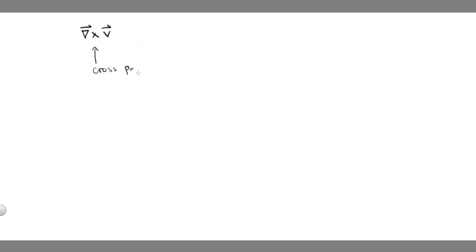The third way is to perform a cross product of the del operator with some vector function v. Although we won't discuss the cross product in detail, using its definition to perform this cross product between the del operator and a vector function, the basic operations hold and the result is a vector function — and this is called the curl of v.